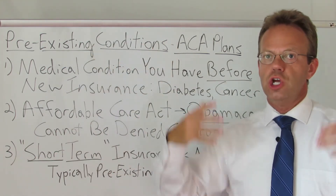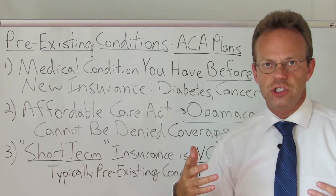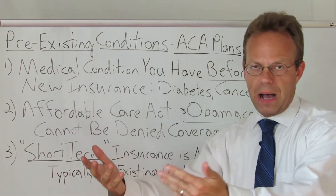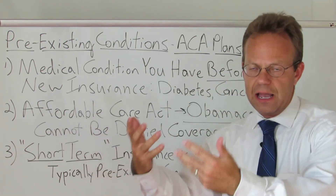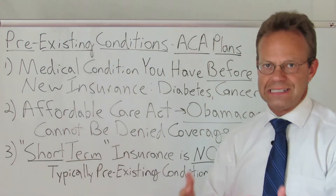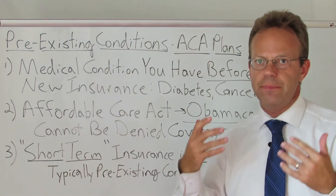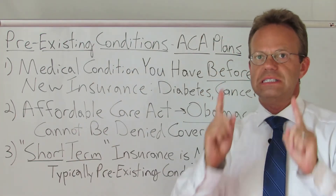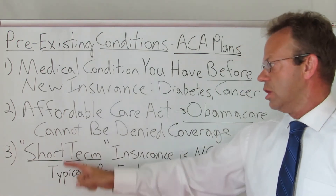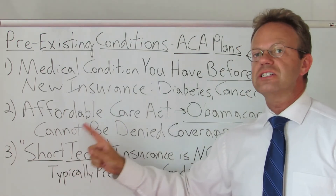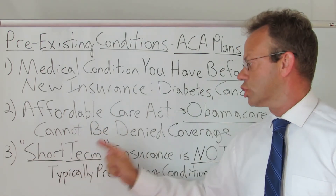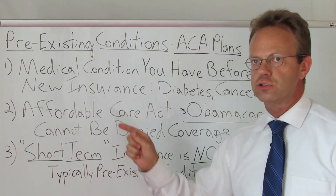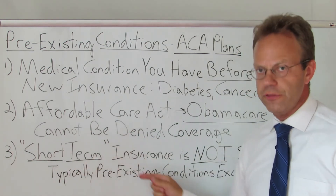So in other words, if you have diabetes and don't have insurance, and then get an Obamacare ACA health insurance plan, it has to cover your diabetes. Now there is an important distinction: there are things called short-term insurance, or short-term health plans, or short-term health insurance.